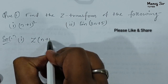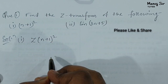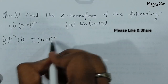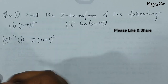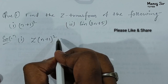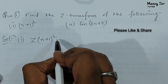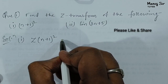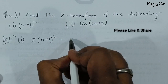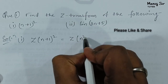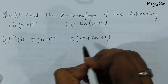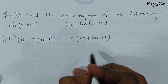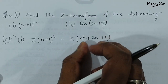What we need to do first is open this bracket. We have (n+1) whole square. We know (a+b) whole square equals a squared plus 2ab plus b squared. So this is going to be the Z-transform of n squared plus 2n plus 1.